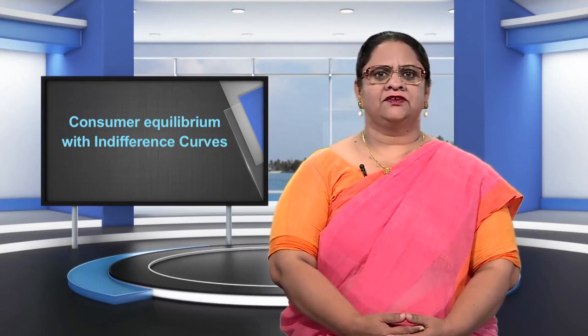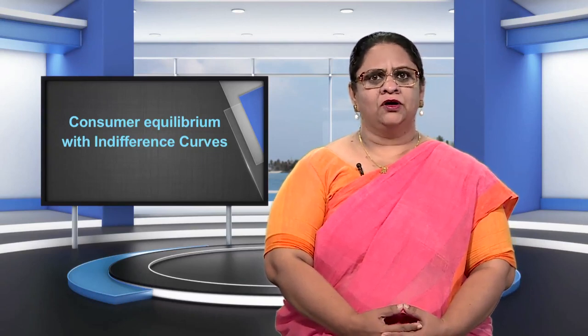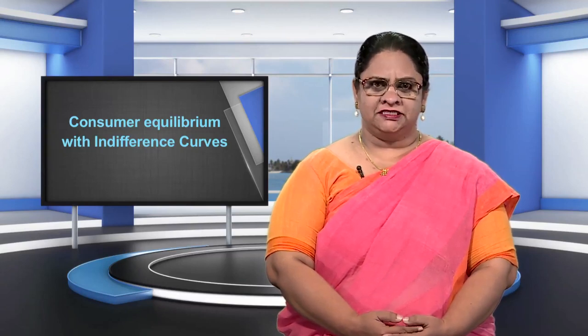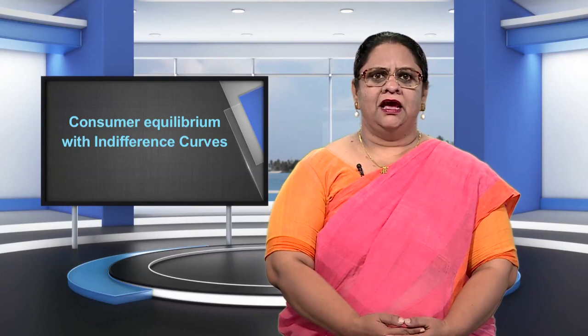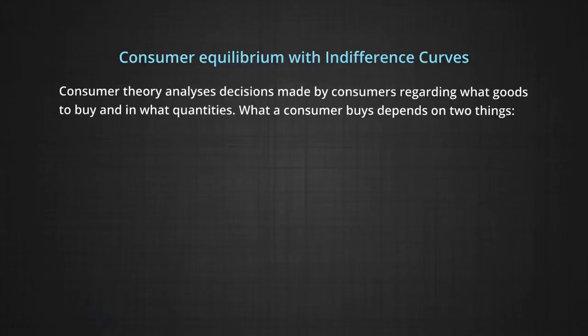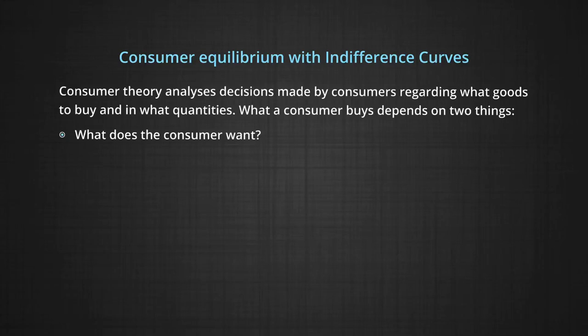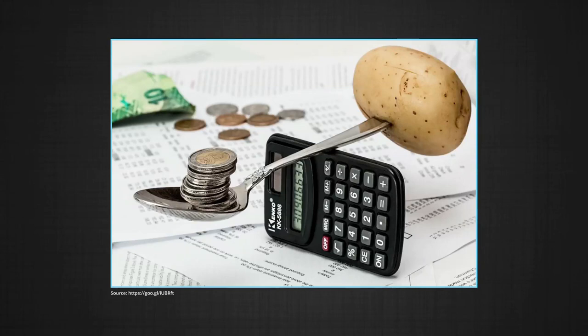In this module, we will take the first steps towards understanding how consumers make their choices by introducing the concepts of budget sets and budget lines. Consumer theory analyzes decisions made by consumers regarding what goods to buy and in what quantities. What a consumer buys depends on two things: what the consumer wants, and what the consumer can afford to buy. Let us examine the second question first — what are the combinations of goods that the consumer can afford to buy?